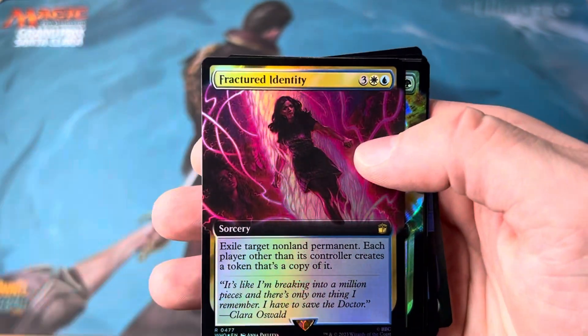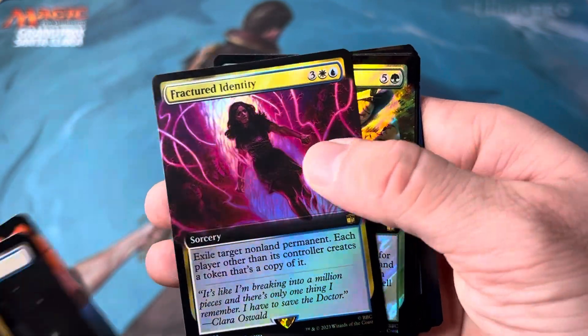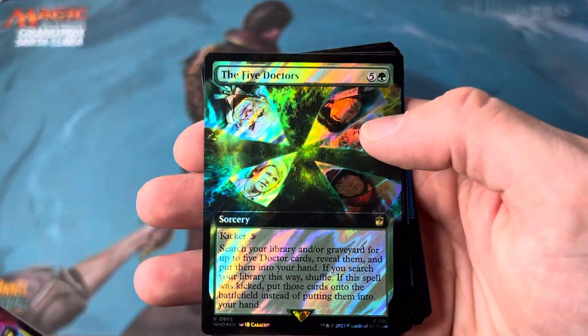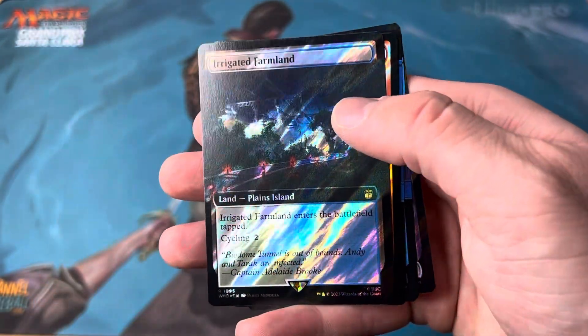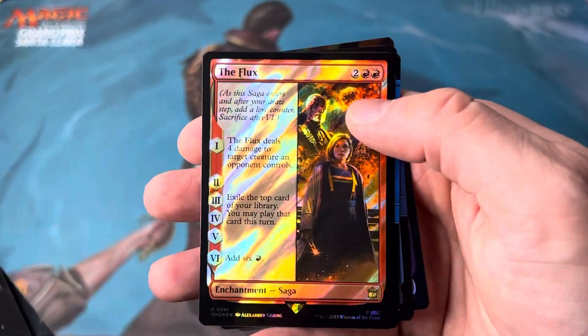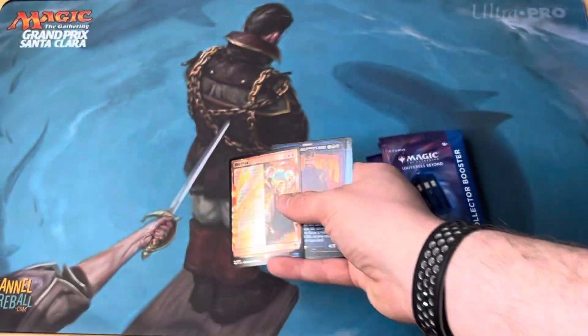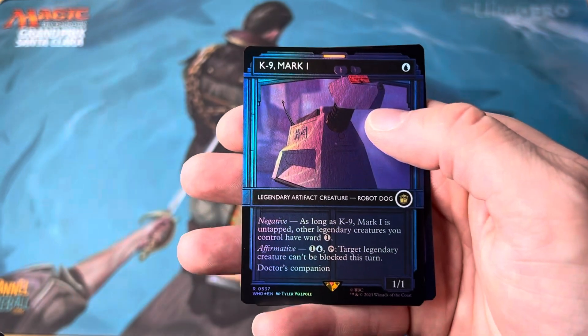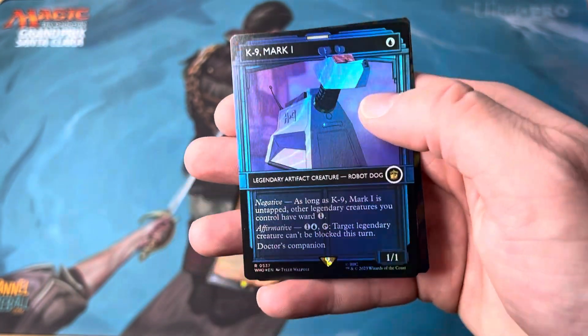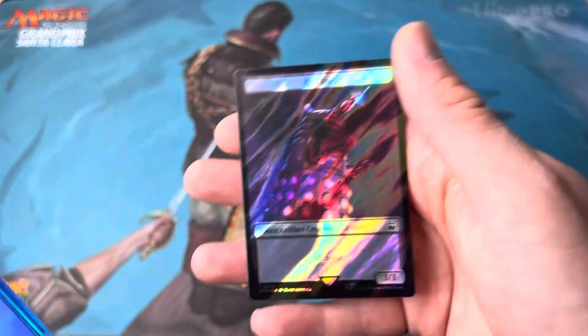Bill Potts. Fractured identity. Ah good old Clara. The five doctors. Irrigated farmland. The flocks. Another fantastic card. The master gallifrey's end. Canine mark one. Look at that guy. Fantastic.